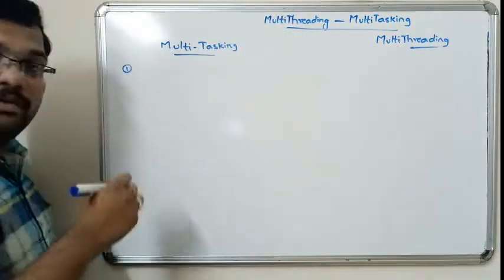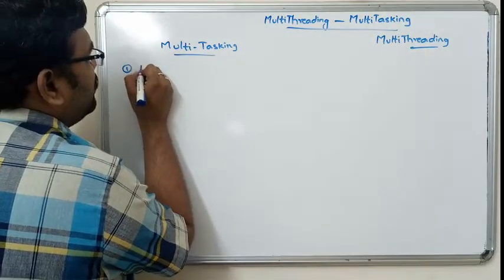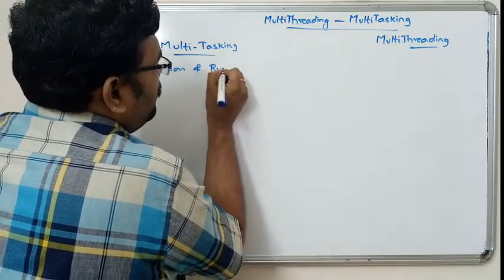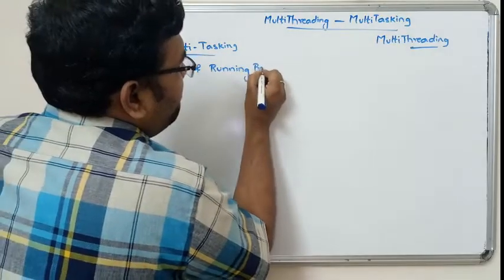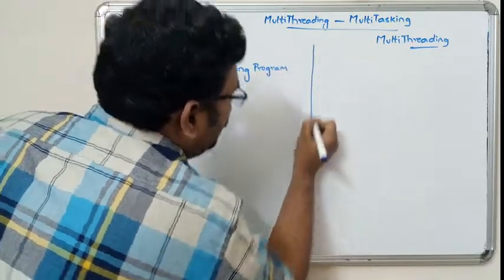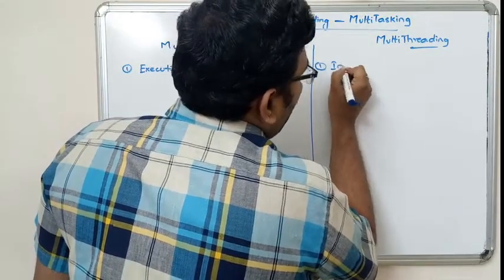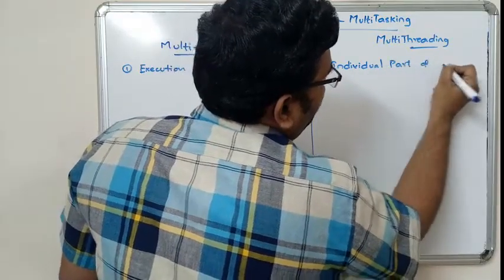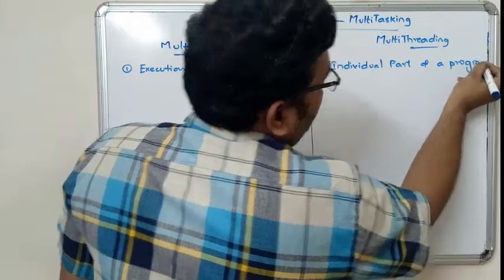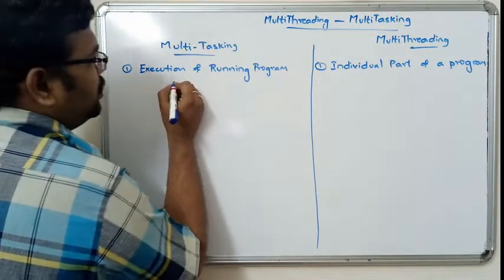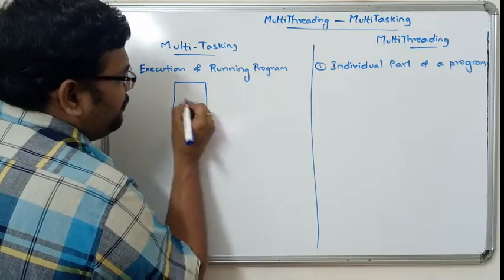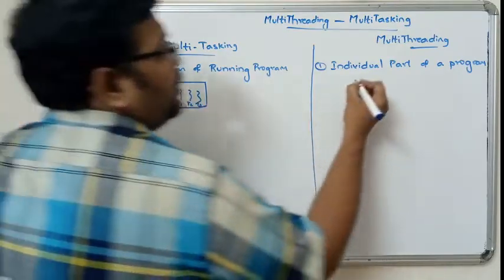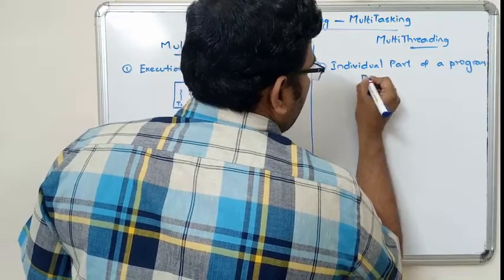The execution of multiple running programs simultaneously is called multitasking. We can represent this as a program containing threads T1, T2, T3, and the same program consists of multiple threads.